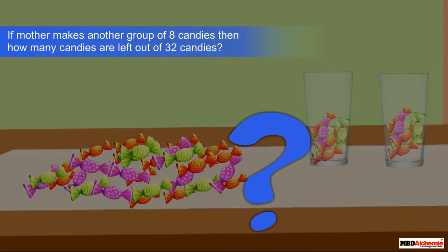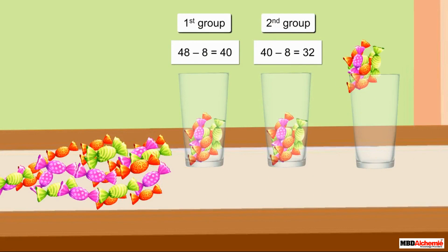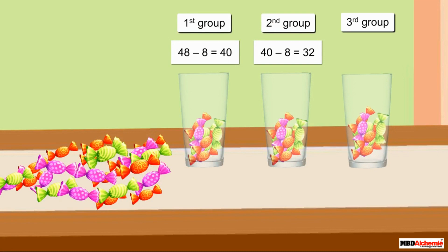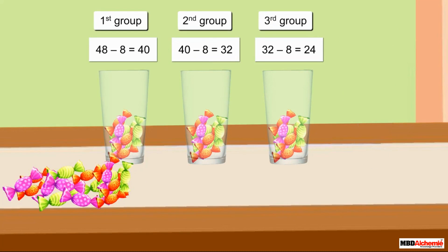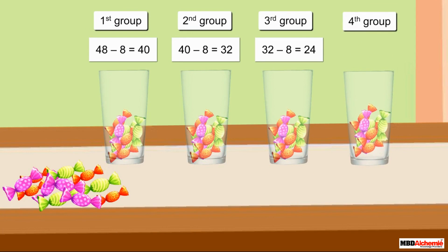If mother makes another group of eight candies, then how many candies are left out of 32? Eight candies in the third group — only 24 candies are left. Similarly, eight candies in the fourth group, and now 16 candies are left.